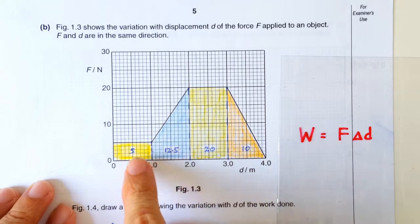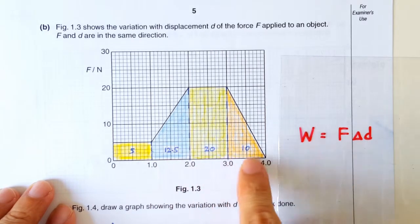So the area for this rectangle, trapezium, rectangle, and trapezium are 5, 12.5, 20, and 10 joules respectively.